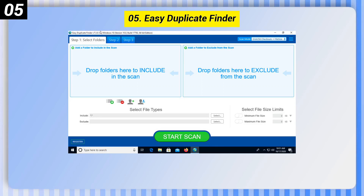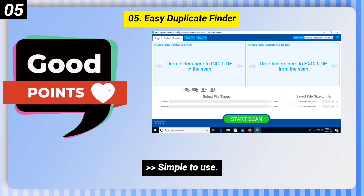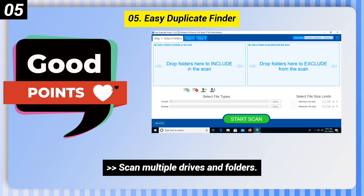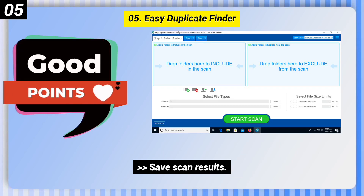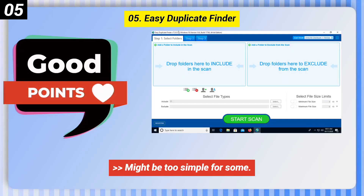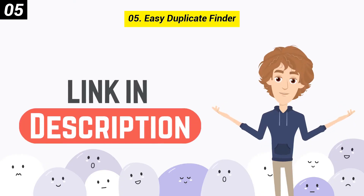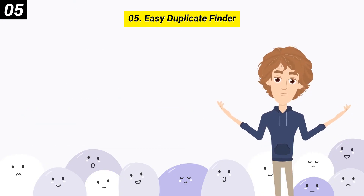Number 5: Easy Duplicate Finder. Good points: simple to use, scan multiple drives and folders, save scan results. Bad point: might be too simple for some. You can check out the link in the description box.